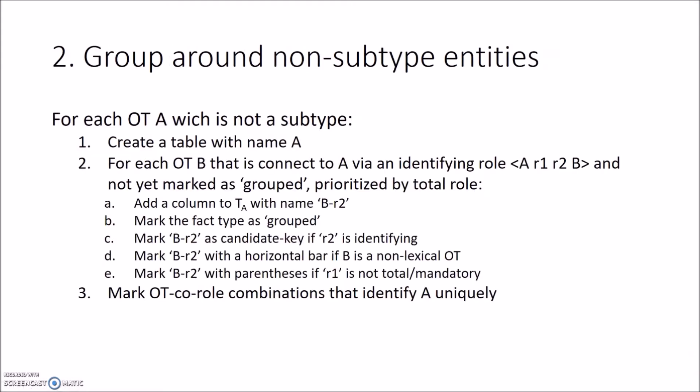The second step in our algorithm is to group around non-subtype entities. For each object type A which is not a subtype, create a table with name A. Then for each object type B connected to A via an identifying role A-R1-R2-B and not yet marked as grouped, prioritize by total role: add a column to A with name B-R2-B, mark the fact type as grouped, mark that column as candidate key if role R2 is identifying, mark the column with a horizontal bar if B is a non-lexical object type, and mark the column with parentheses if role R1 is not total or mandatory. Finally, mark the object type or role combinations that identify A uniquely.